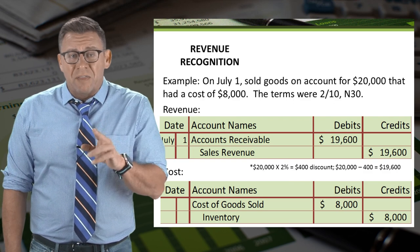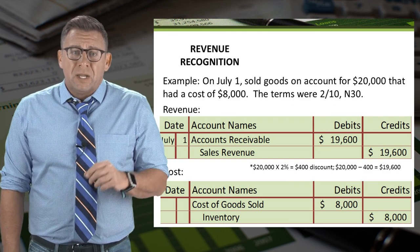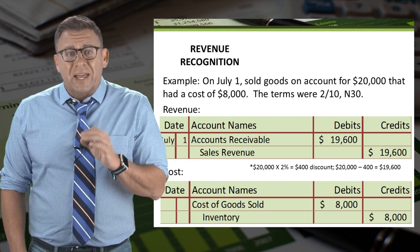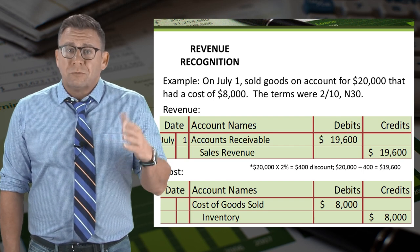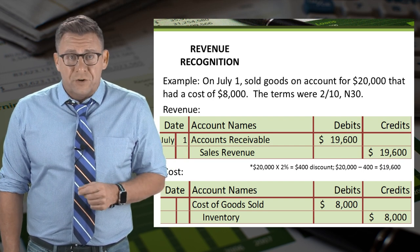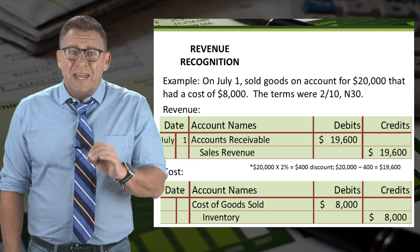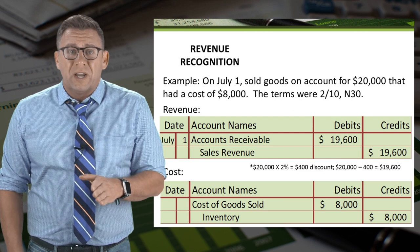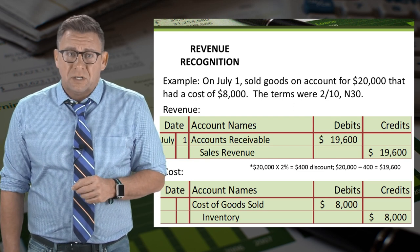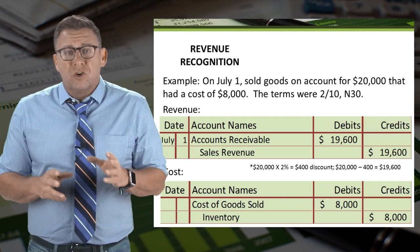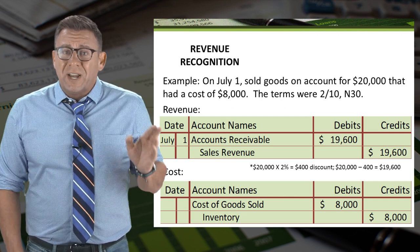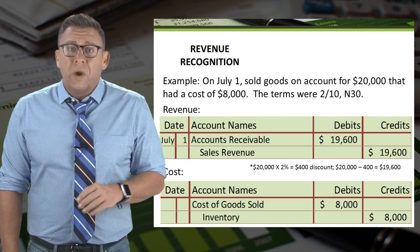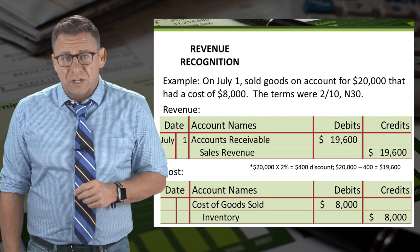Let's look at an example with sales discounts and how that impacts our journal entry. For example, on July 1, we sold goods on account for $20,000 that had a cost of $8,000. The terms were 2/10 net 30. Because so many companies take the sales discount, the new revenue requirements state that revenue must be recorded at the net of discount amount. So we would debit accounts receivable and credit sales revenue for $19,600 rather than the sales price of $20,000. We are recording the revenue at the net of discount amount.